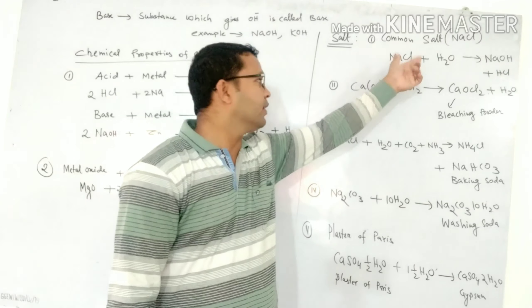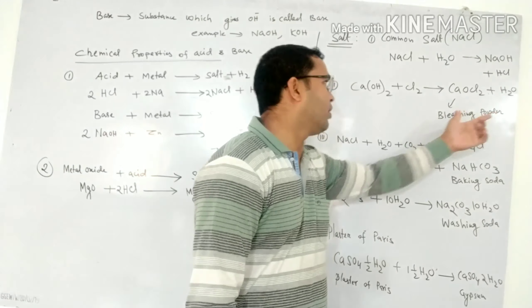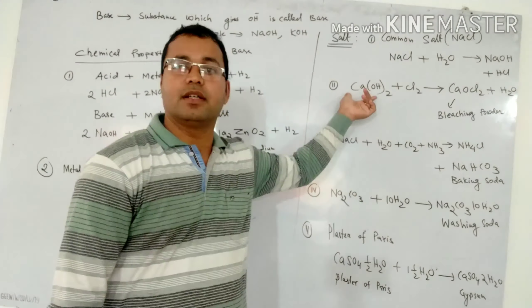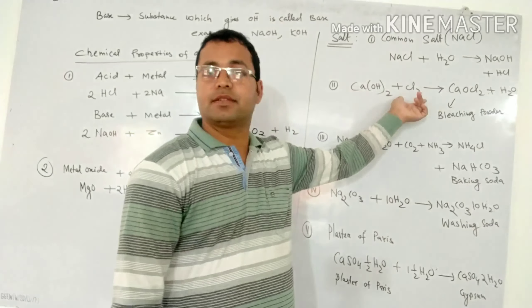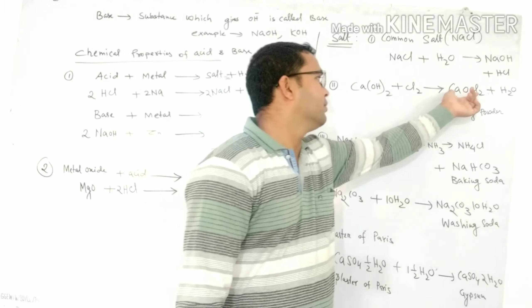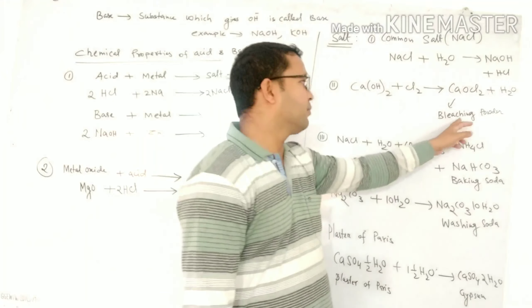And next one is bleaching powder. Calcium hydroxide, it is also known as slaked lime, react with chlorine gas gives bleaching powder and water.